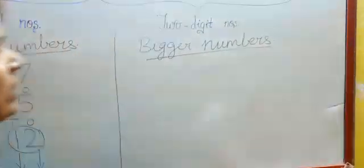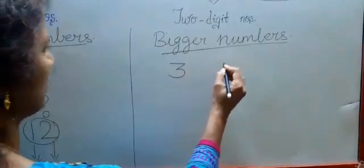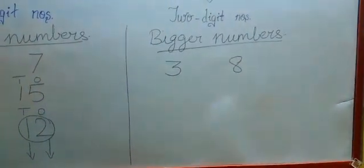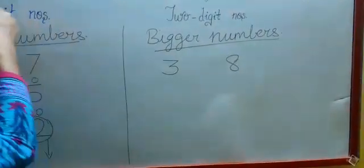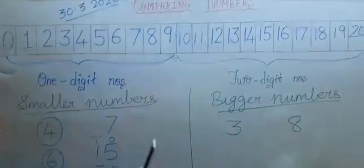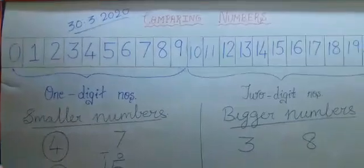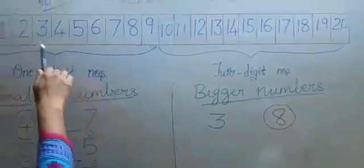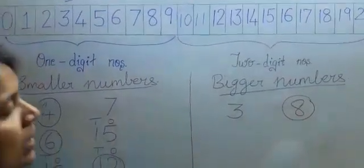First, we will compare two one-digit numbers: 3 and 8. Which is the bigger number? Both are one-digit numbers. See on the number line — here is 3, and here is 8. So 8 is further away from 0. The number which is further away from 0 is called the bigger number, so 8 is the bigger number.